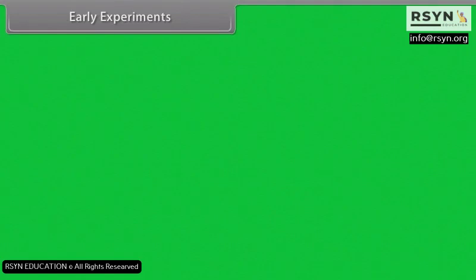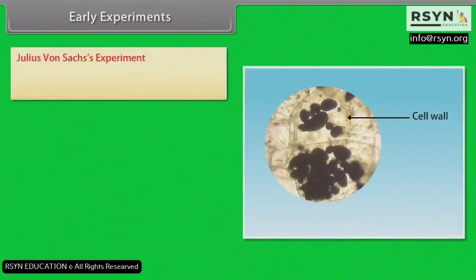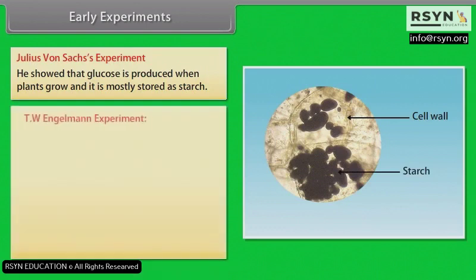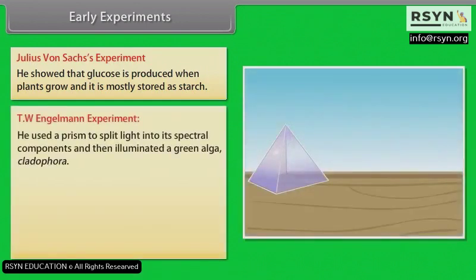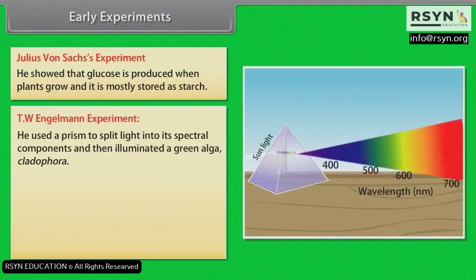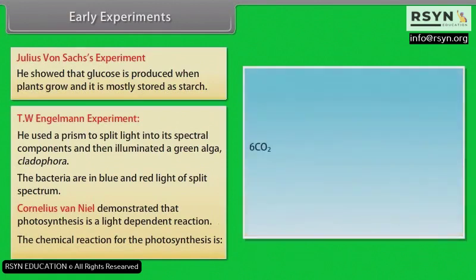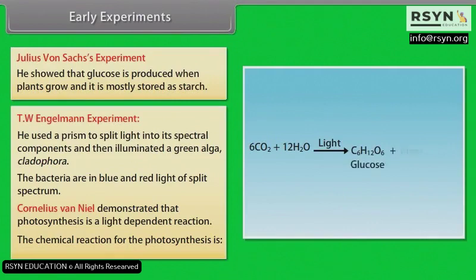Julius von Sachs showed that glucose is produced when plants grow and is mostly stored as starch. T.W. Engelman used a prism to split light into its spectral components and illuminated a green alga, Cladophora, observing that bacteria congregated in the blue and red light of the split spectrum. Cornelius Van Neel demonstrated that photosynthesis is a light-dependent reaction. The chemical equation for photosynthesis is: 6CO2 + 12H2O, in the presence of light, gives C6H12O6 (glucose) + 6H2O + 6O2.